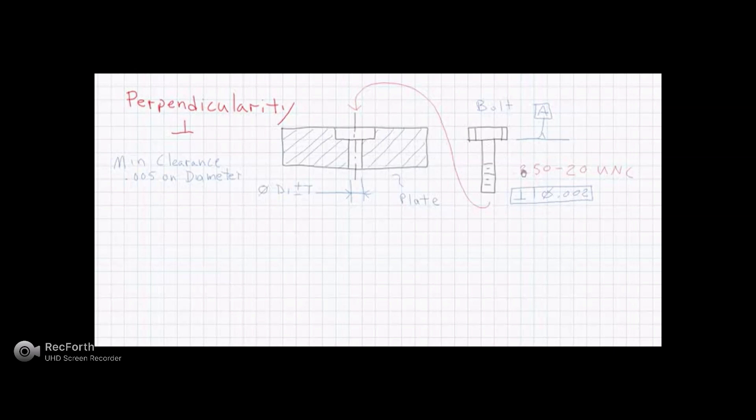So our fastener is a quarter inch 20 UNC. Datum A is the mating surface of the head, and we have a perpendicularity on diameter of 2,000ths.